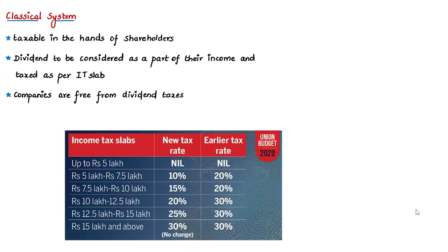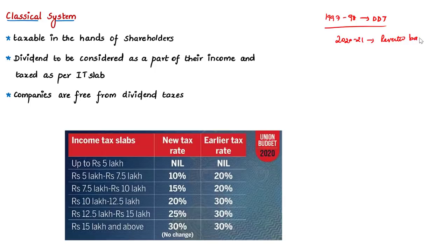Before DDT, dividends were taxed under the classical system in India. After considering the advantages and disadvantages, India adopted the DDT regime from 1997-98. But Union Budget 2020-21 has abolished the DDT and reverted back to the classical system. Under the classical system, the dividend is taxable in the hands of the shareholder — dividends from companies reach the investor in full and shareholders are taxed as per their income tax slab.